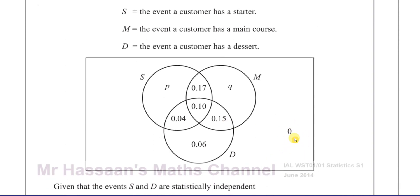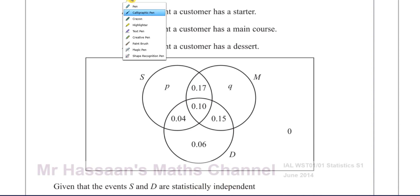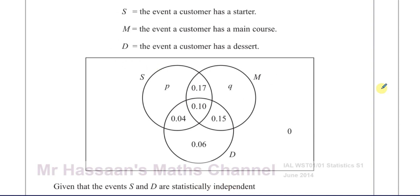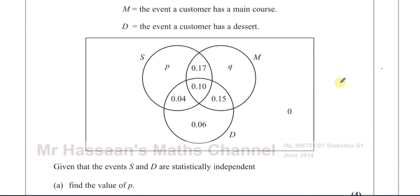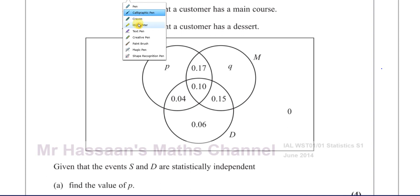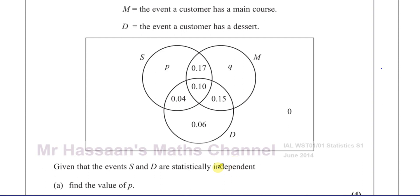Given that the events S and D are statistically independent, we want to find the value of P. Independent is a very important word here in probability, and a lot of people make mistakes in this regard.